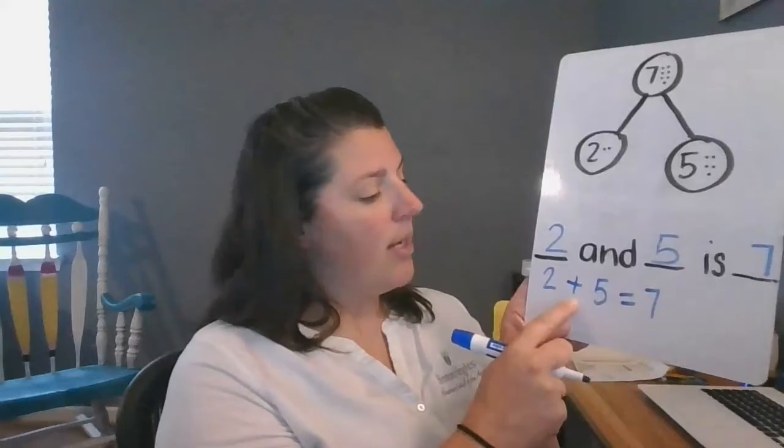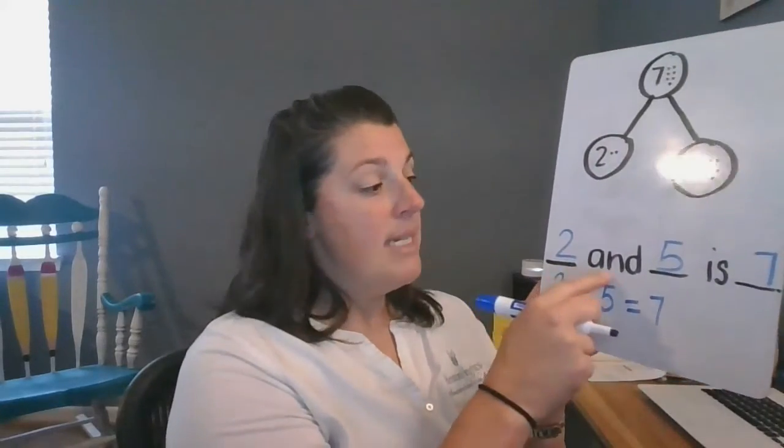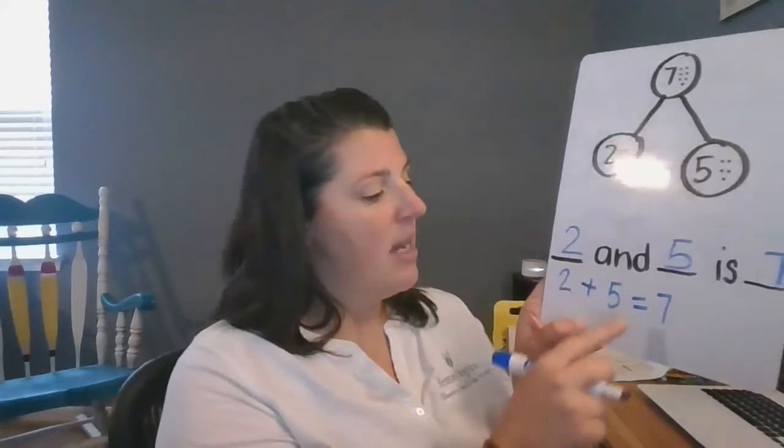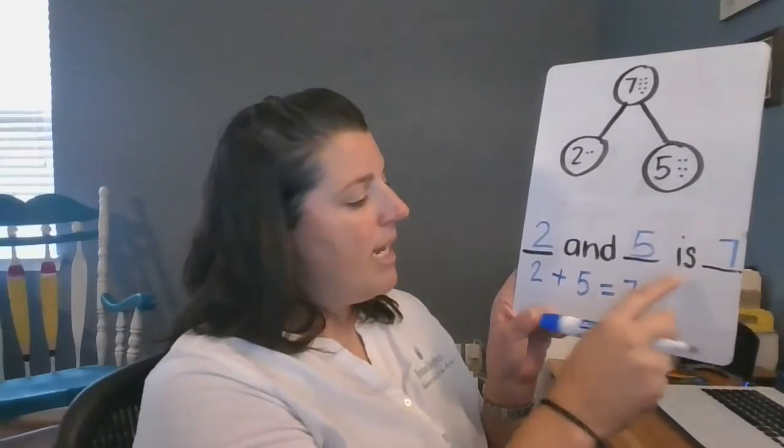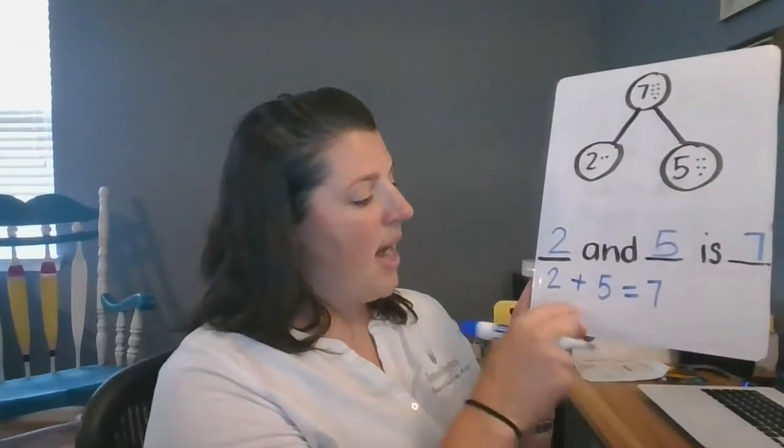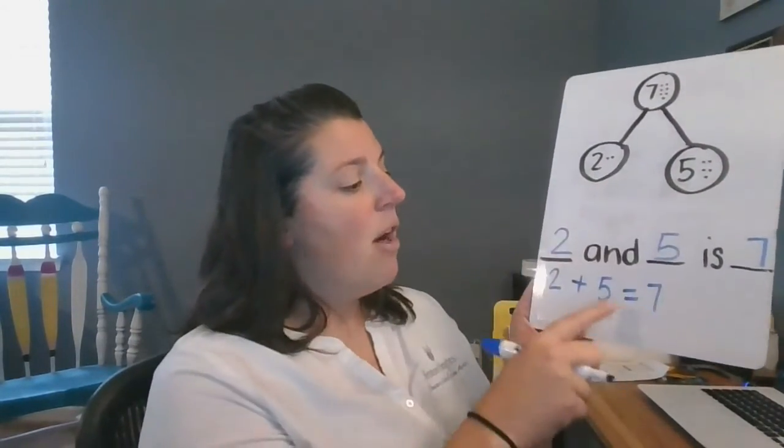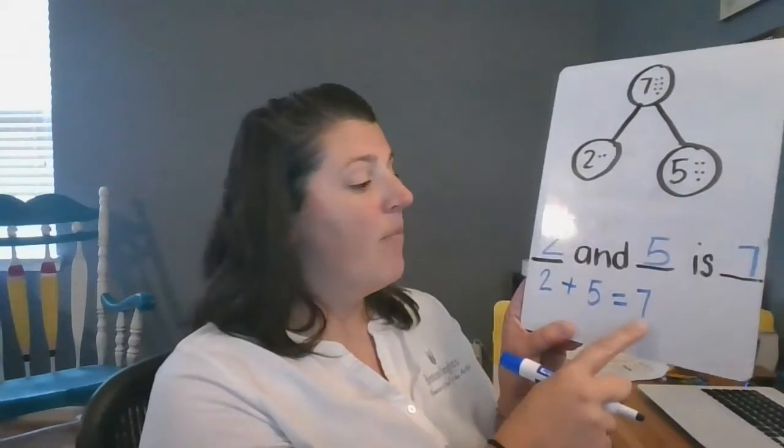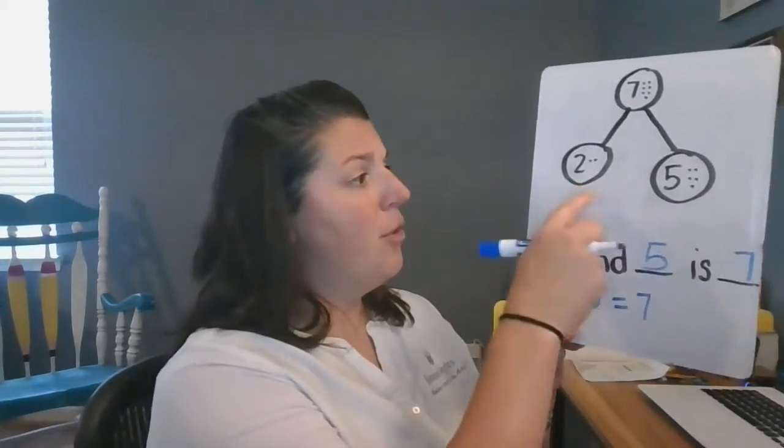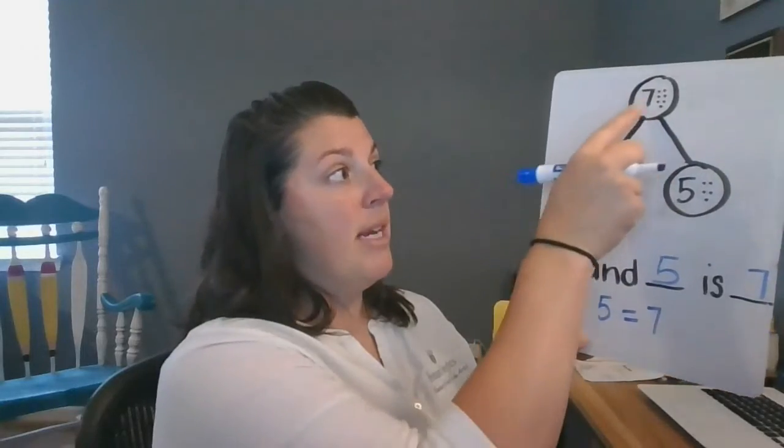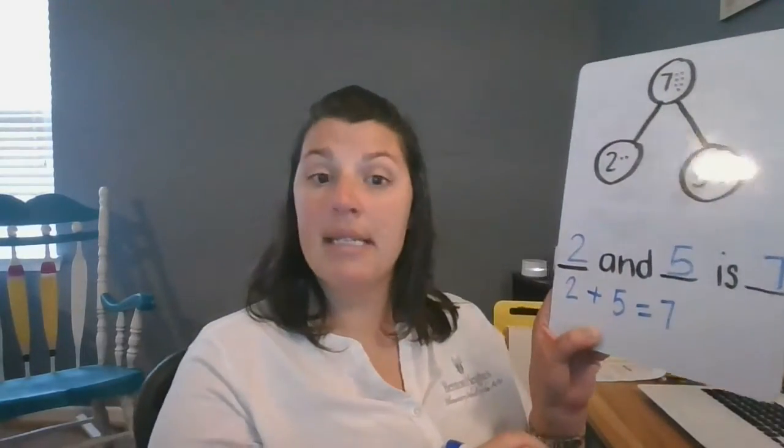These math symbols, the plus sign and the equals sign, represent the words we use. This equals sign, or the word is, means the things on this side, a two and a five, are the same as the thing on this side, a seven. Two and five makes, or is, or is the same as, seven.